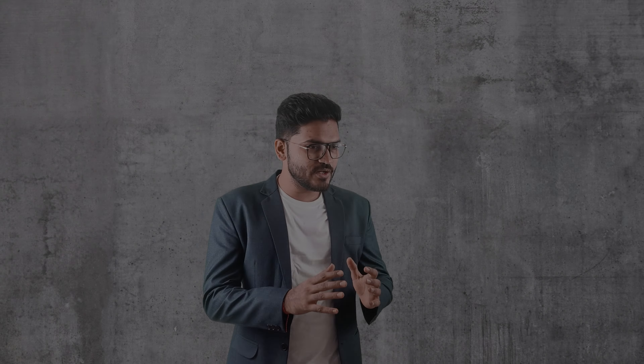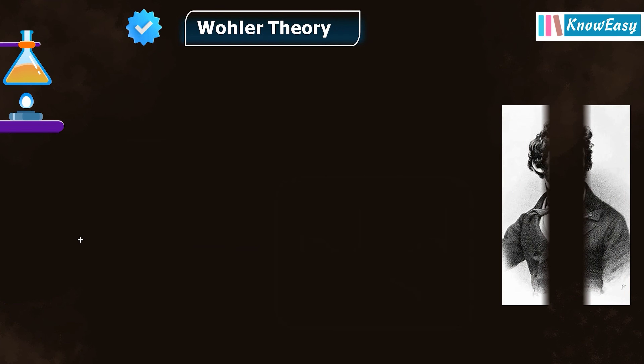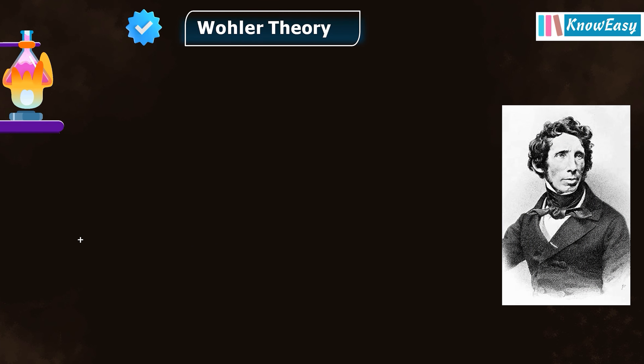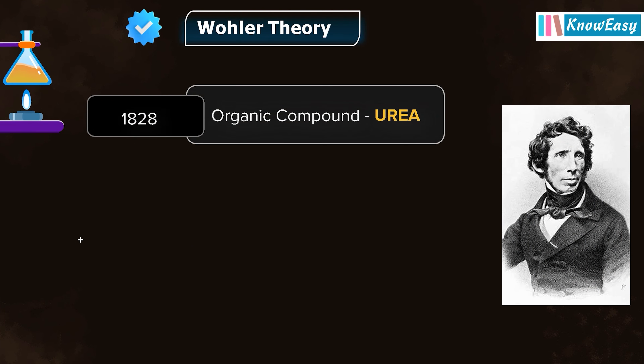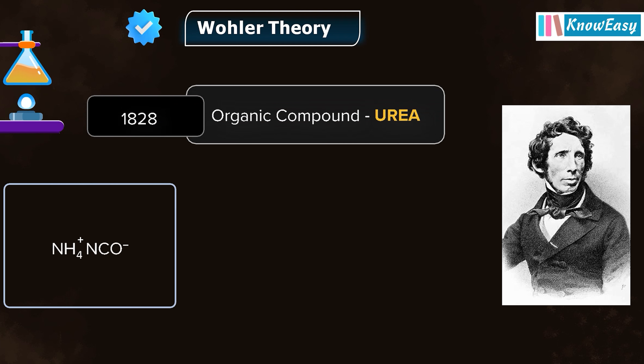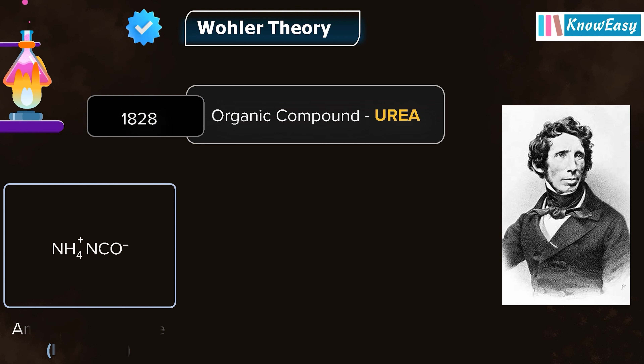And his name is Frederick Wöhler. He was born in 1800. This theory was overturned by scientist Frederick Wöhler. In 1828, he synthesized the organic compound urea in the lab from inorganic starting materials.